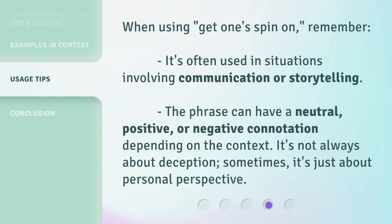When using 'Get One Spin On,' remember it's often used in situations involving communication or storytelling. The phrase can have a neutral, positive, or negative connotation depending on the context. It's not always about deception — sometimes it's just about personal perspective.